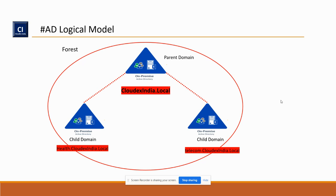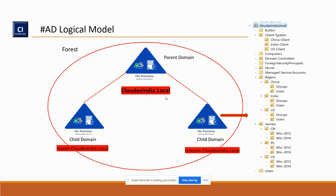So I create health.cloudxindia.com, and after some time the business also decides to deal in the telecommunications sector. When it goes into telecom, it decides to provision a new domain under the same forest — telecom.cloudxindia.com. The reason for domain isolation is to keep each entity separate, policies separate. That is why every organization has multiple domains based on their business use. So the logical model is: forest, domain, child domain, and then the last part — OU.